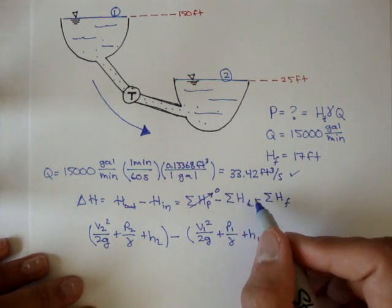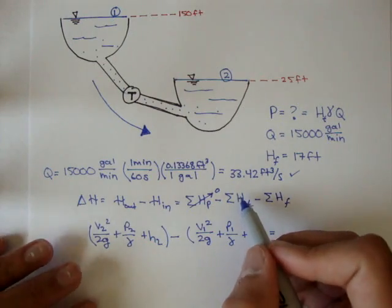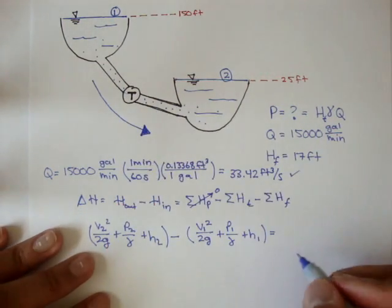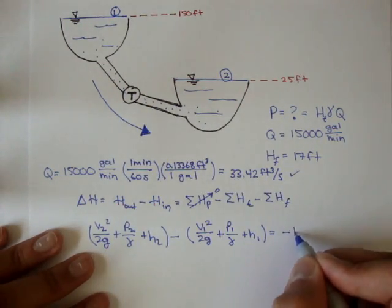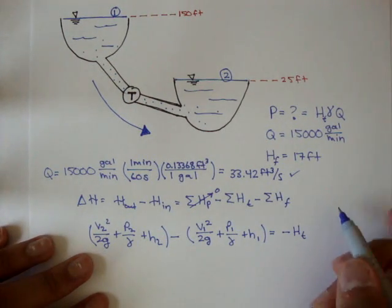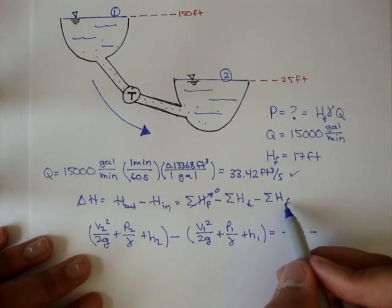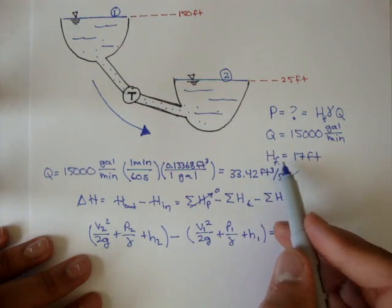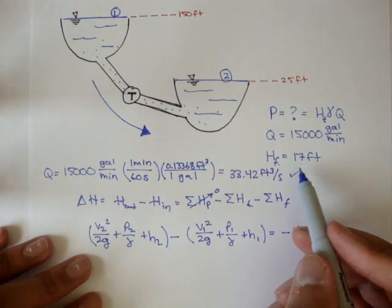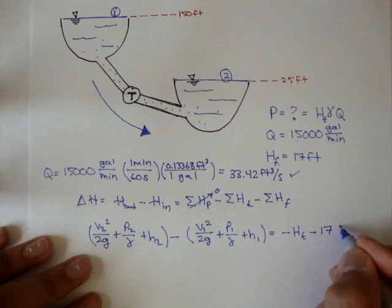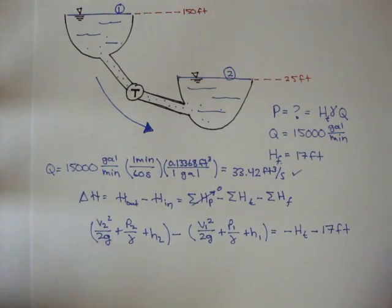Minus all of the turbines, or all of the turbine heads. In this case, there's only one, so we can just say minus HT minus all the frictional head losses. In this case, they only give us one throughout the whole system here, and that's 17 feet, so minus 17 feet.